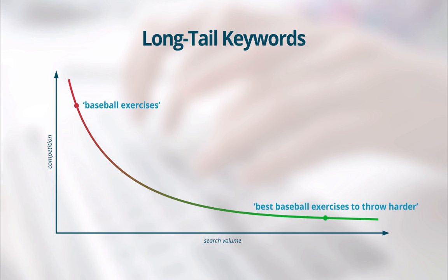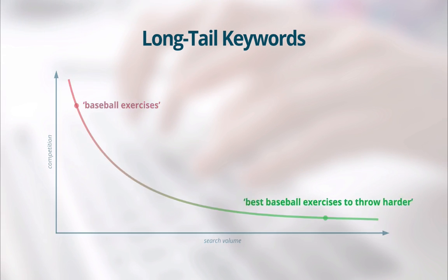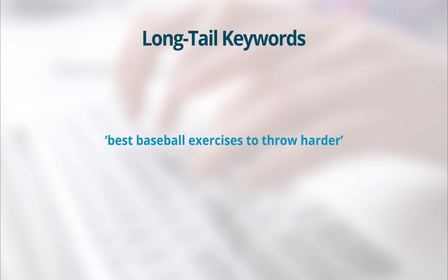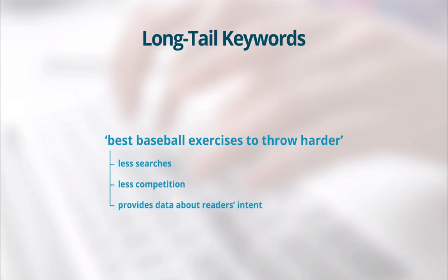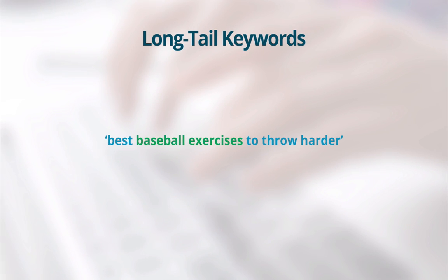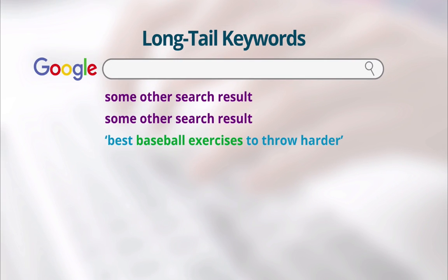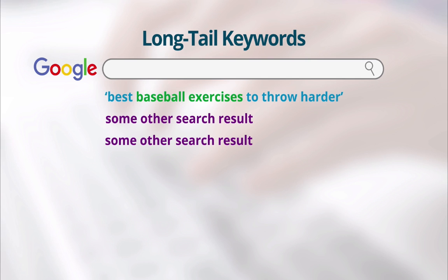In this scenario, the keyword 'best baseball exercises to throw harder' would be a better term to target than the broad term 'baseball exercises.' The phrase 'best baseball exercises to throw harder' will have less searches, but also less competition. Additionally, you're going to know the intent of the reader, so you can provide exceptional content just for them. Lastly, you still have the broad phrase in your keyword, so over time, as your page proves to be valuable, Google will increase your rankings in the broad keyword search results. Always target the long-tail version of your broad keyword.